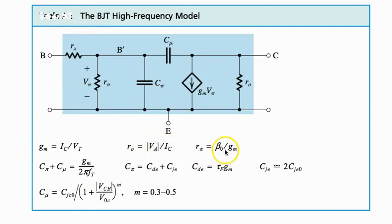R_pi is beta_0 over g_m. C_pi equals C_de plus C_je. C_de plus C_je. C_de is tau_F times g_m. This is depletion capacitance.